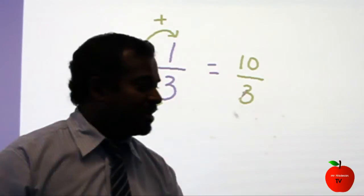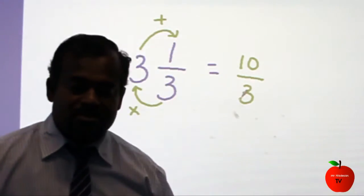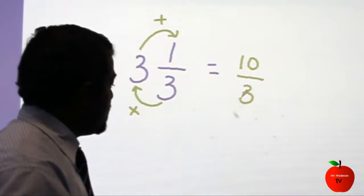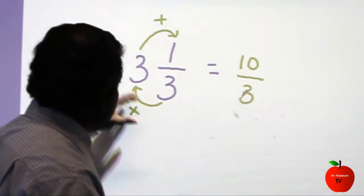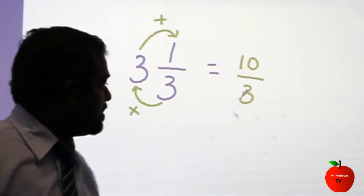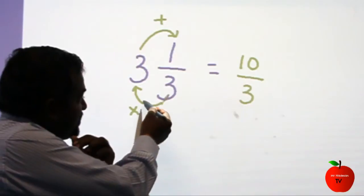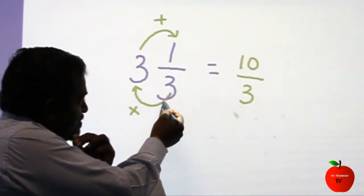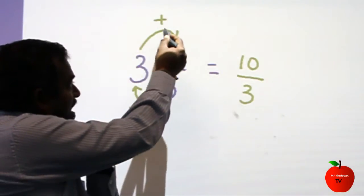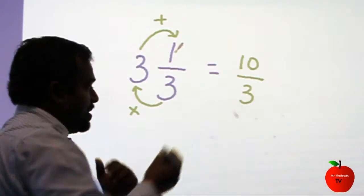Let me repeat one more time. The 3 and 1 over 3 is the mixed number. I have to convert it to an improper fraction. You multiply these two numbers first — 3 times 3 comes to 9. Then add 1: that gives 10 over 3.